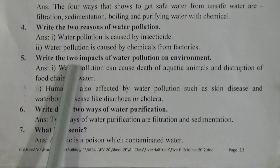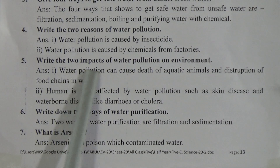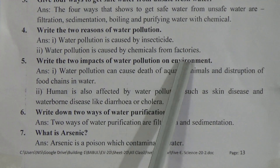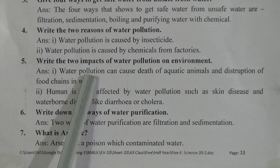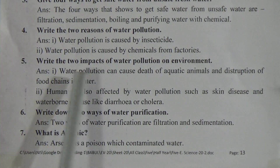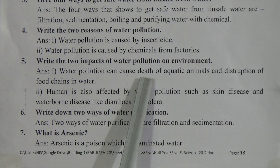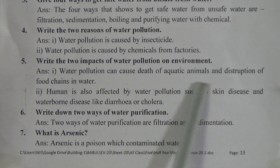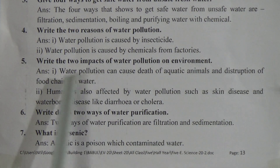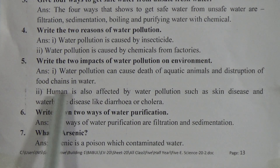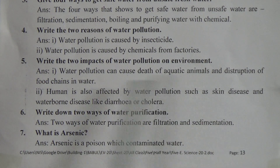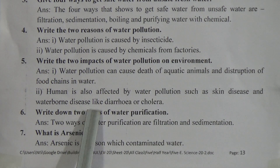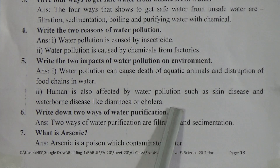Short question number 5: Write the two impacts of water pollution on environment. Number 1, water pollution can cause death of aquatic animals and disruption of food chains in water. Number 2, humans are also affected by water pollution such as skin disease and waterborne diseases like diarrhea or cholera.